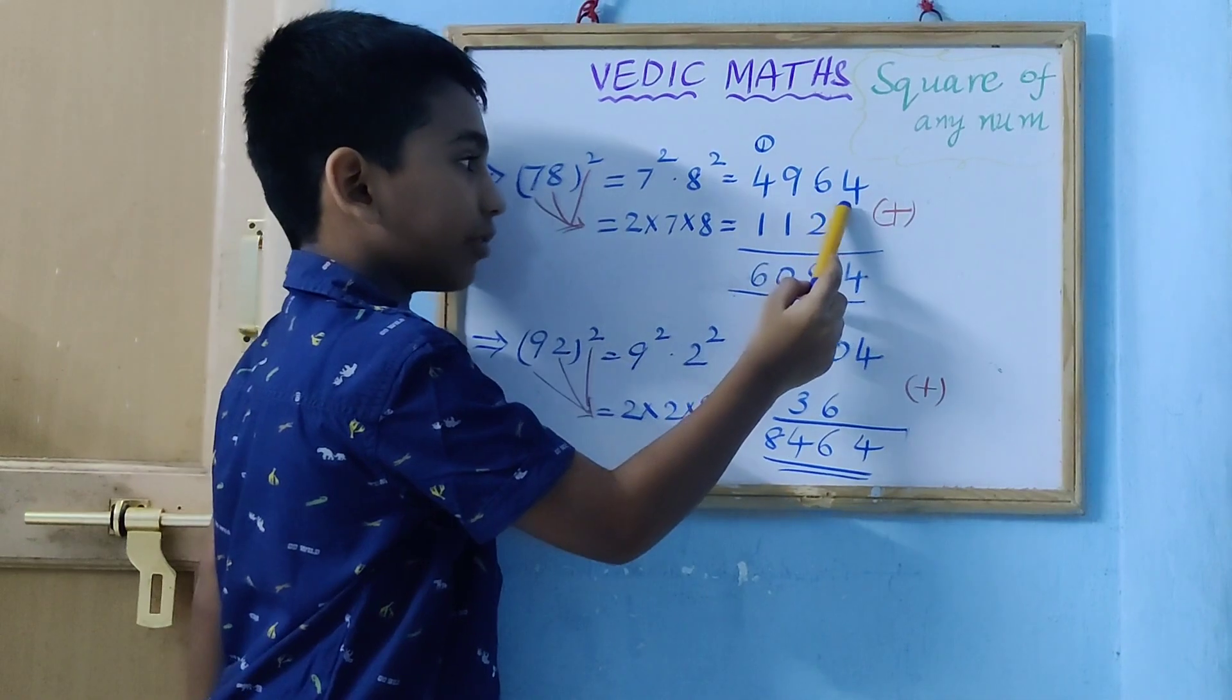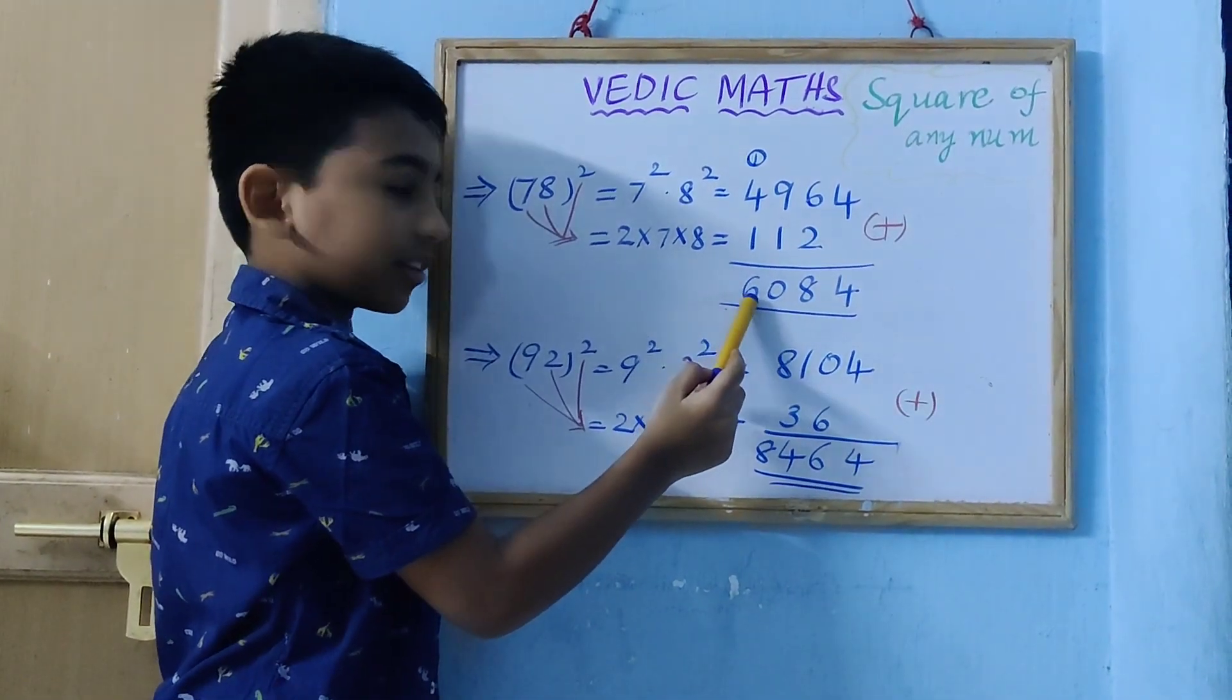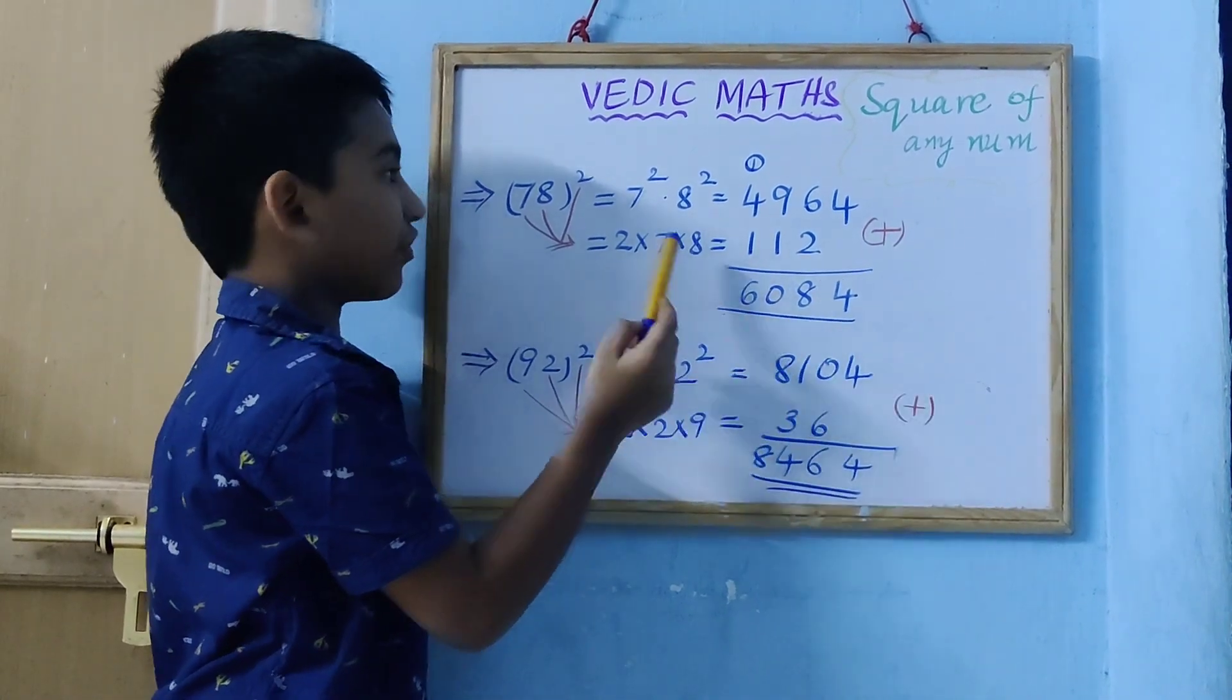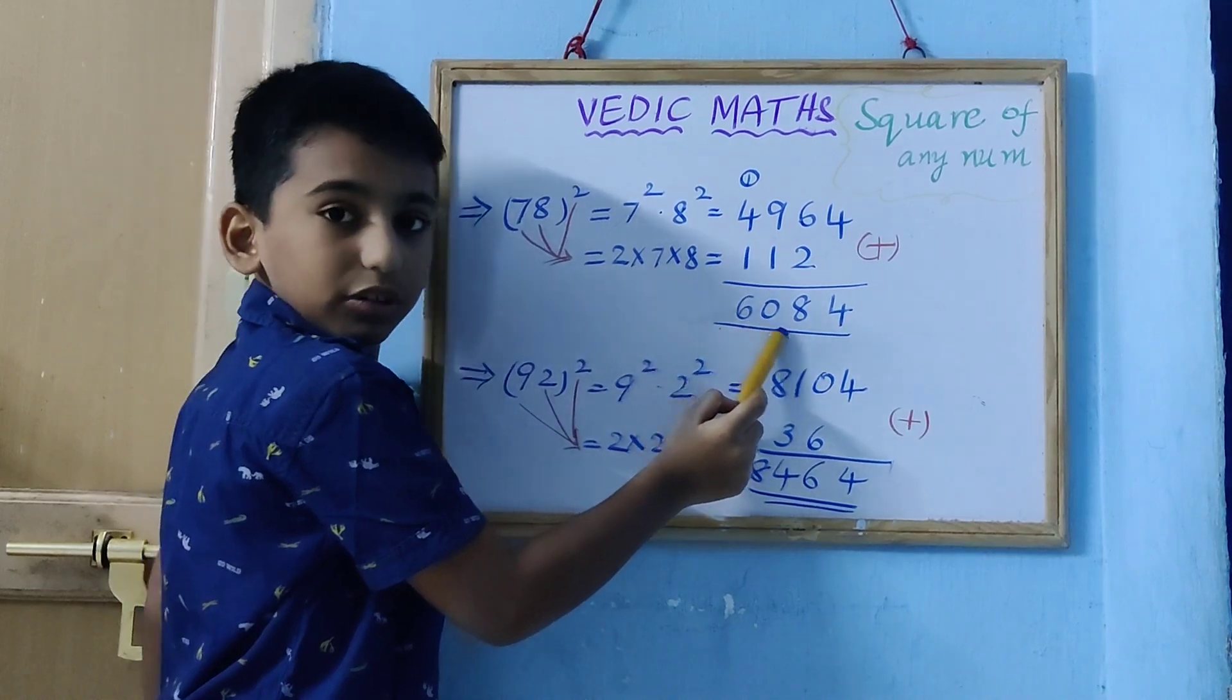We have to leave units place. Then, add these two numbers. So, the result is 6084. Therefore, 78 square equal to 6084.